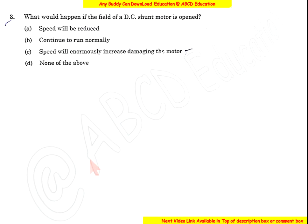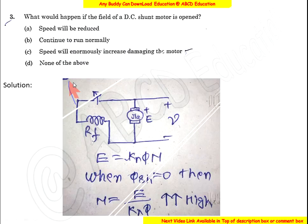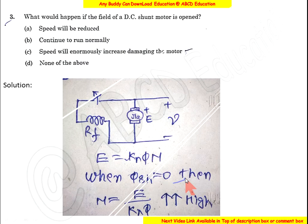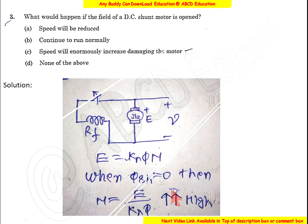Question 3: What would happen if the field of the DC shunt motor is opened? If the shunt field becomes zero, the speed becomes dangerously high because speed is proportional to E/φ, and with φ equal to zero, the speed is E/0. This dangerously high speed will damage the motor. The correct option is C.